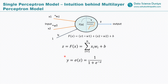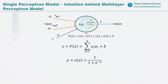The activation function could be any mathematical function — there are multiple activation functions used in deep learning, like the sigmoid function, ReLU, and tanh. I will talk in depth about activation functions in an upcoming video. Whatever output we get from the weighted sum, we apply the activation function to it and that is our final output y. This is what happens inside a single neuron model.